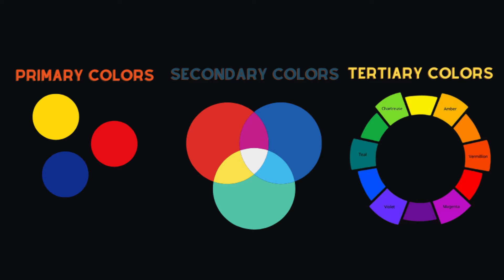The third category is tertiary, or mediary, colors, and these are mixes of primary and secondary colors. These combinations provide a greater range of hues, giving us a lot more options. Hues are really just defined as the attribute of color that distinguishes it as red, blue, green, or any other specific color on the color wheel. It is these three categories that build the foundation for the color wheel.